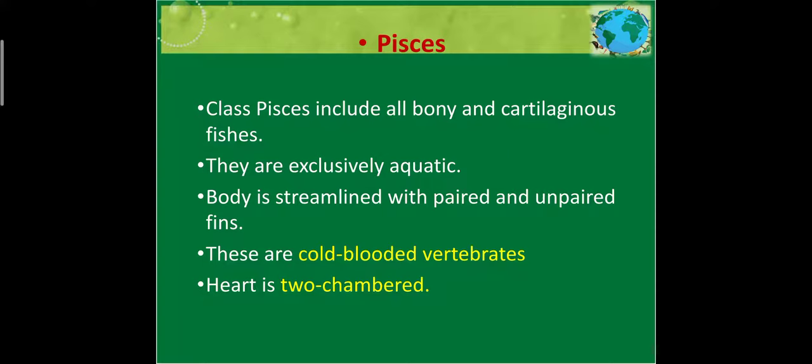The characteristic features of Pisces: they are aquatic, their body is streamlined — like a plane structure, thin from front, thicker in the middle and thin at the back — with paired and unpaired fins. Fins help in locomotion. They are cold-blooded vertebrates and have a two-chambered heart.